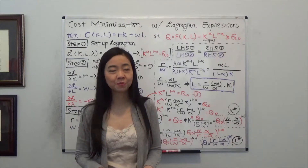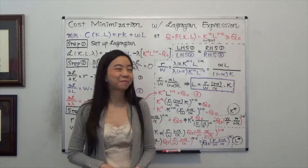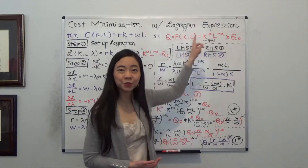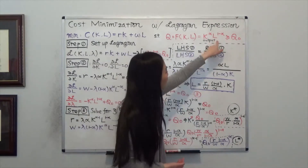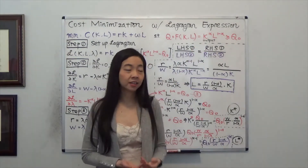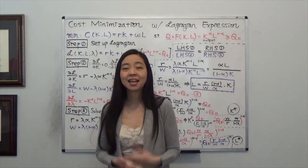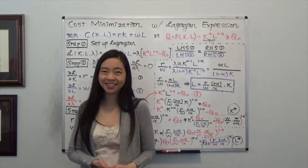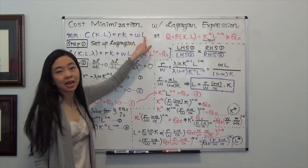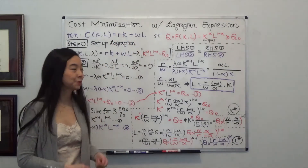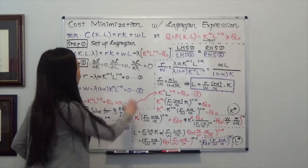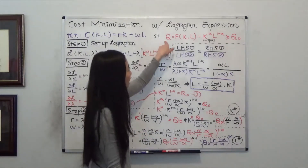Here is the story. You have a firm that hires capital and labor to produce goods, and your production function follows a Cobb-Douglas production function: quantity is equal to capital to the power of alpha times labor to the power of 1 minus alpha. You sign a contract with your client that your output has to be greater than or equal to Q0. Your goal is to satisfy this output constraint and at the same time minimize your cost. Your cost is equal to R times K plus W times L, where R is the rent of using capital, W is the wage rate, and K and L are the amounts of capital and labor you hire.